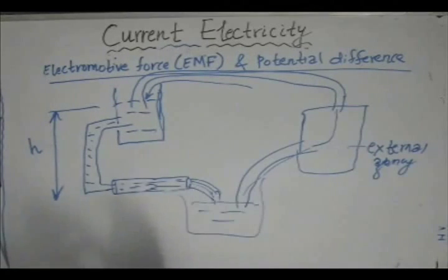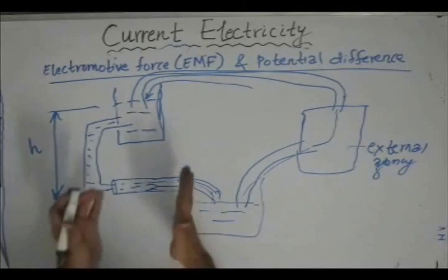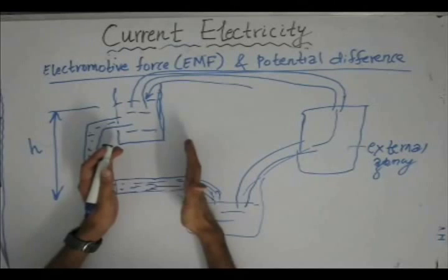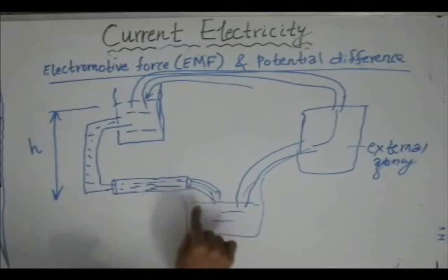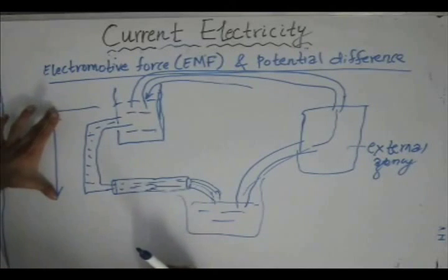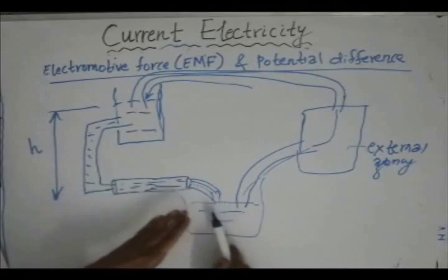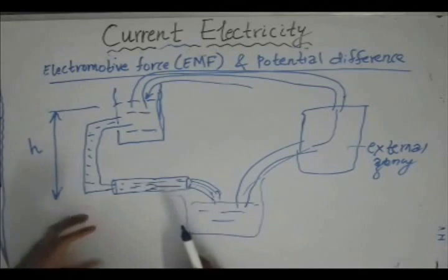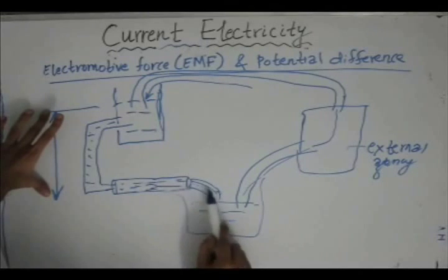This is also what happens in the case of the flow of charges. Comparing it with current electricity, water can be replaced by charge. When there is no potential difference between the ends of the conductor, there is no flow of charges. But as soon as there is some potential difference — just as pressure difference caused water to flow — there is some flow of charges.